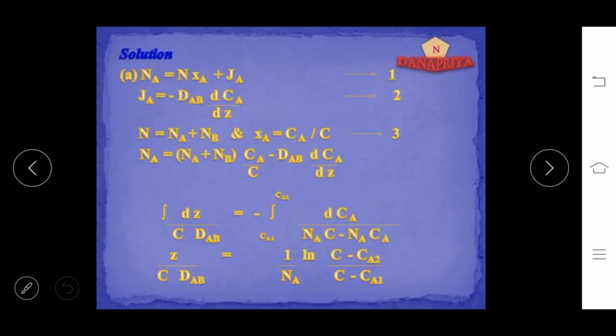To start the derivation: Na = N·Xa + Ja, where Na is flux of component A (oxygen), N·Xa is total flux times mole fraction representing mass transfer between stagnant and bulk flow. To find the flux for a particular component, we find total flux times mole fraction plus Ja. Ja is mass transfer at a particular point.